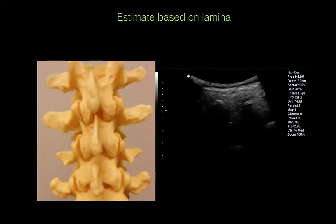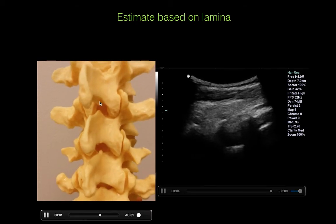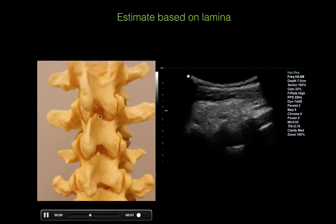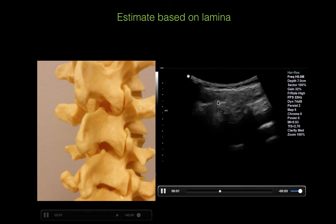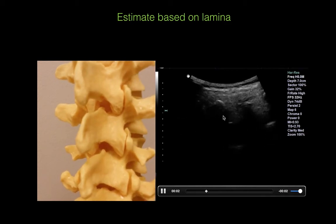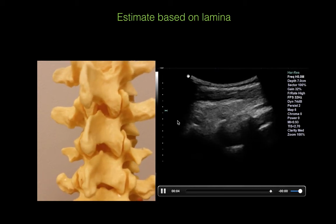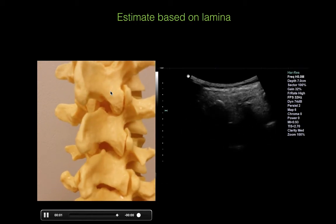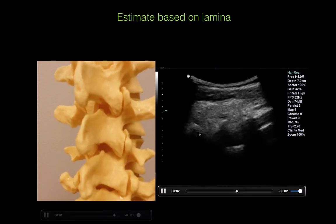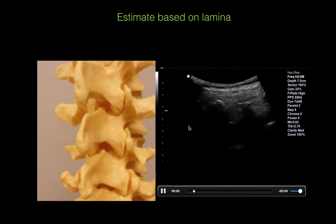The second method, helpful to use in conjunction with direct visualization, is to estimate the depth based on how deep the lamina are. If you rotate the view slightly, you can see the lamina, and that would be approximately how deep your needle wants to go. You can see the spinous processes at the top, and then as you image laterally, you can see the scalloping structures — those are the lamina. Keep in mind that because you are imaging at an angle, you are overestimating the distance, meaning you never really want to insert your needle deeper than that measurement.